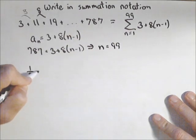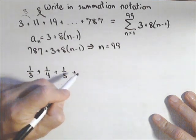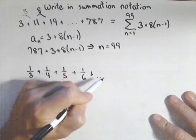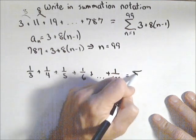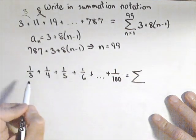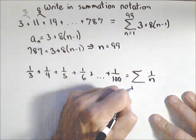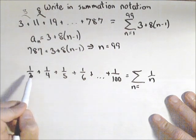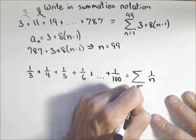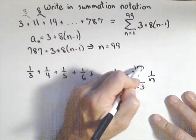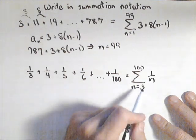What if we did this? What if our series is 1 third plus 1 fourth plus 1 fifth plus 1 sixth, and so on, up to 1 over 100? There's a really nice, slick way we can do this. We can see that the term is 1 over n. The only thing is I don't want to start at 1, because if I start at 1, that's going to be 1 over 1. So I've got two choices. One is I could just say, well I'm going to let n equal 3 and let it go up to 100. And so that'll work. It starts at 3, goes up by 1 every time until I get up to 100.